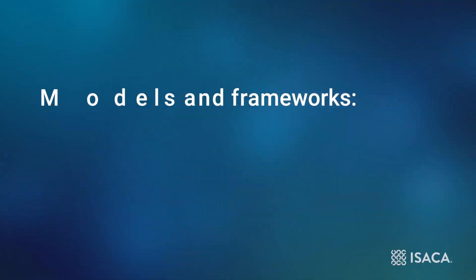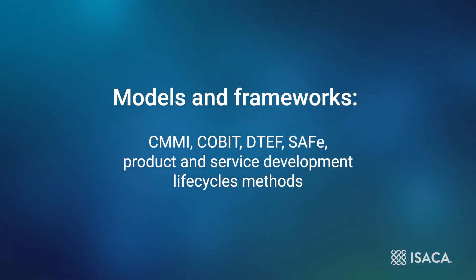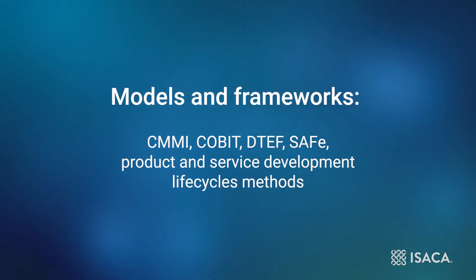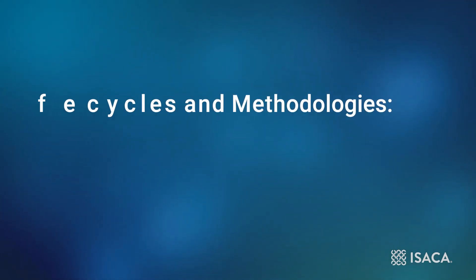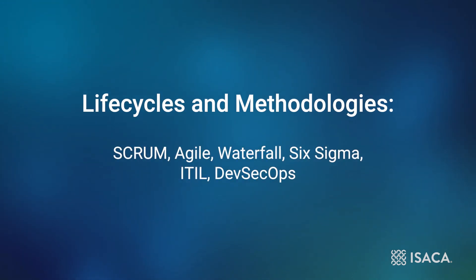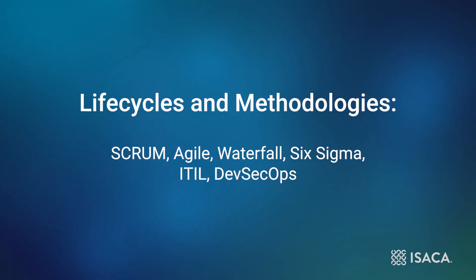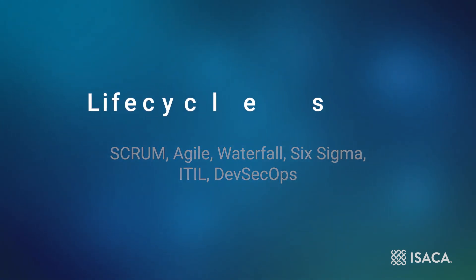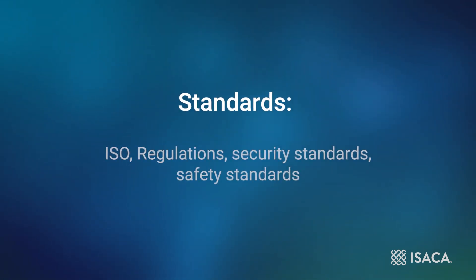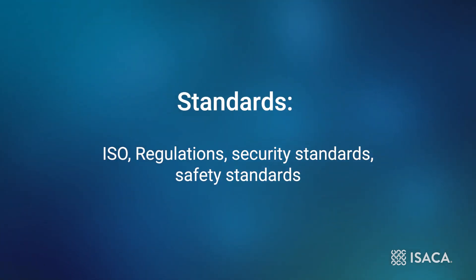Let's start by looking at some of what is out there. Well, there are a lot. Maturity models, ISO and other similar international, national, and local standards, Six Sigma, Scrum, SAFe — Scaled Agile Framework, COBIT, DevSecOps, regulations, Agile, Waterfall, safety standards, security standards, improvement life cycles — the list goes on and on.